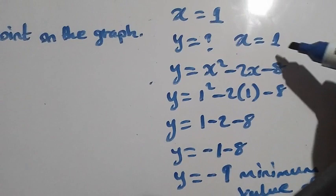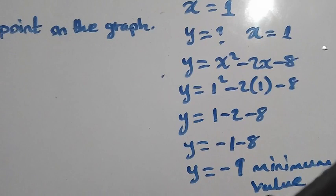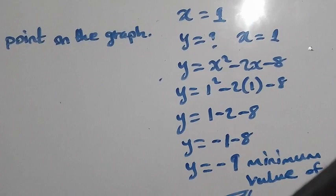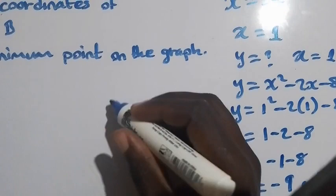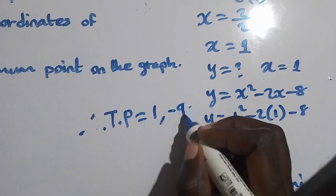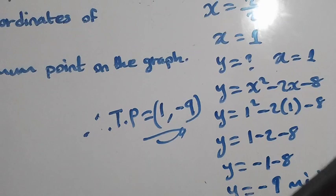So if the question requires you to find the turning point, you simply take x equal to 1 and y equal to negative 9. This question asks for the minimum point on the graph, which is the turning point. Therefore, the turning point is 1 comma negative 9. Thank you for watching. This is Mr. Moringa E — don't forget to subscribe to my YouTube channel and share the video.